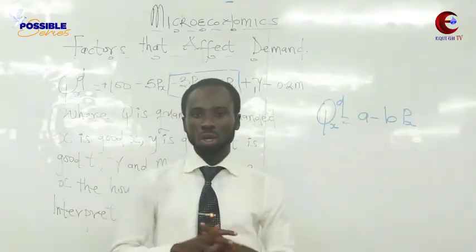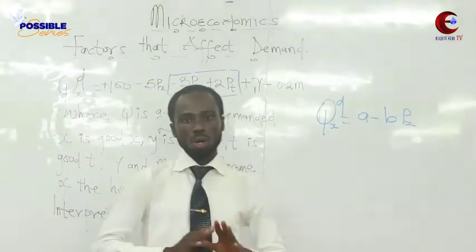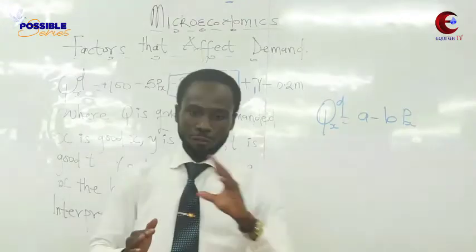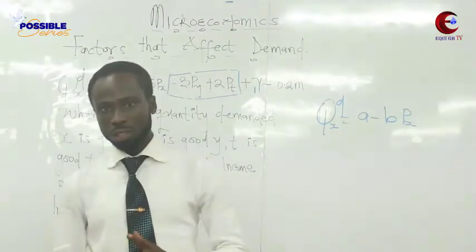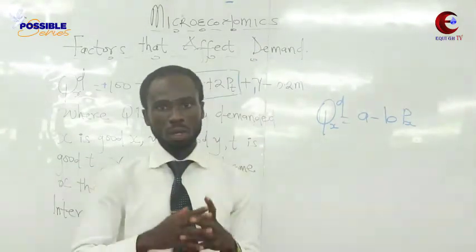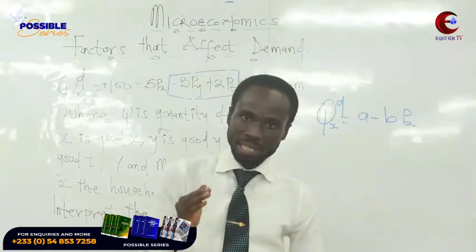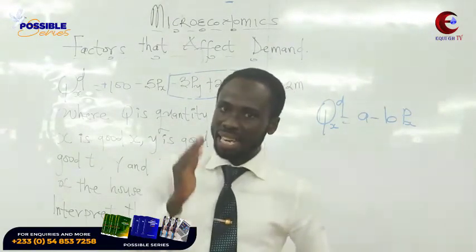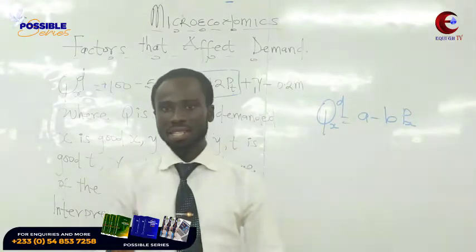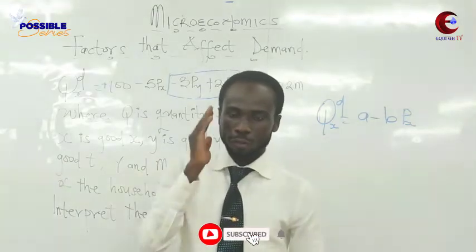In our next lecture, we are going to introduce the supply function, perform some computations alongside the demand function, calculate the equilibrium, and then calculate total revenue, consumer surplus, and producer surplus. Make sure to get a copy of the Possible Series — Possible Principles of Microeconomics, Possible Communicative Studies, and Possible Introduction to Computing — so that you can pass your quizzes and exams with ease. My name is Possible; make sure to subscribe to the channel for more videos. Bye-bye.